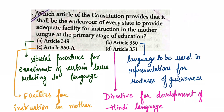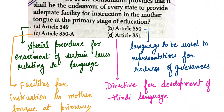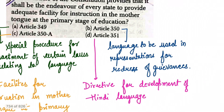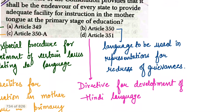Let's see the four options. Article 349 deals with the special procedure for enactment of certain laws relating to language. Article 350 is about the language to be used in representations for redress of grievances. Article 359 is also one of the options.